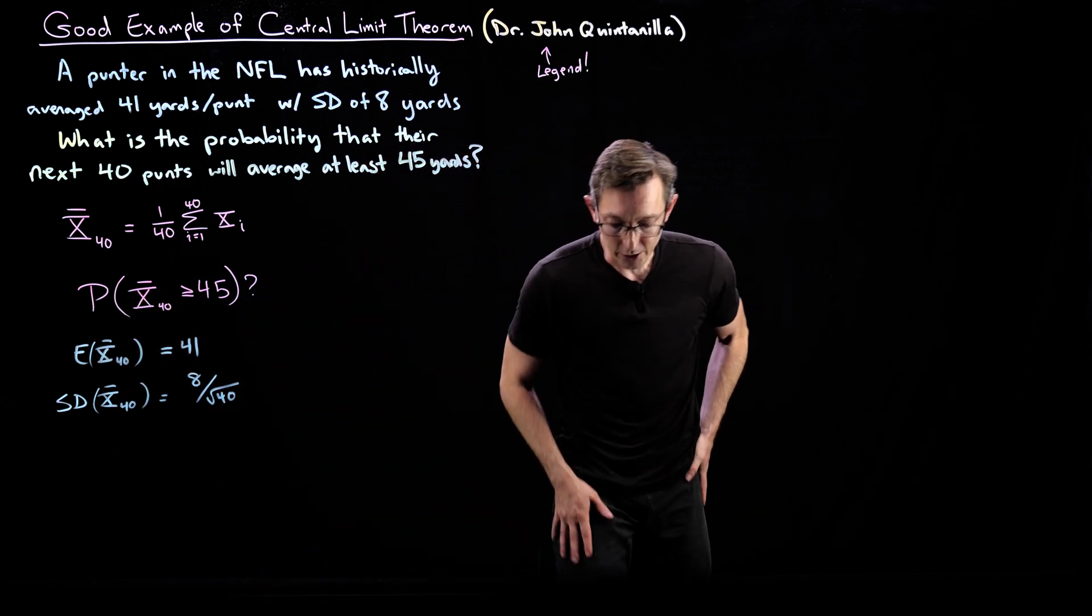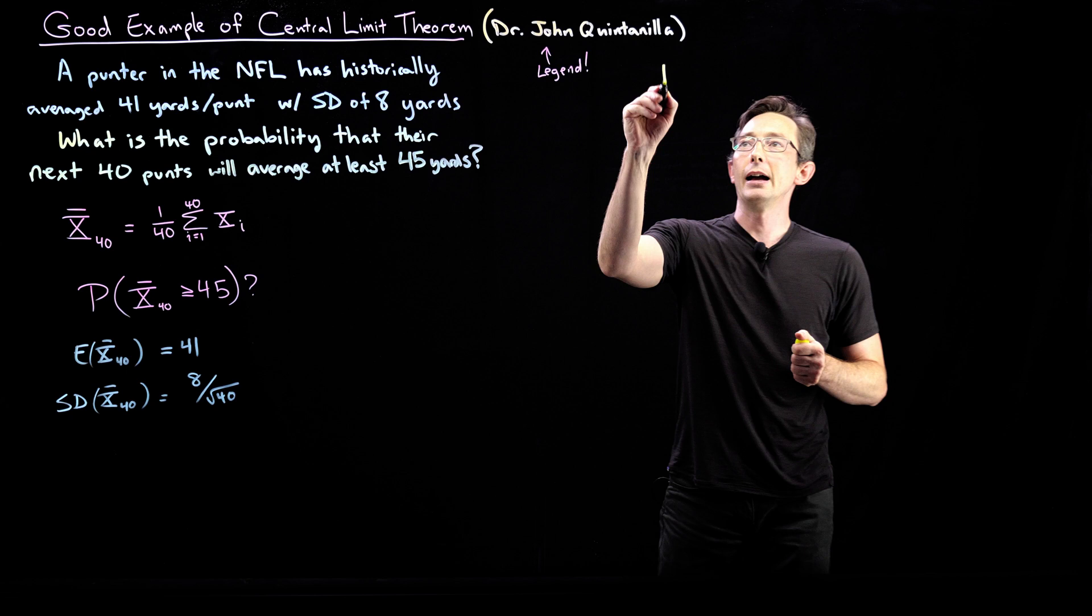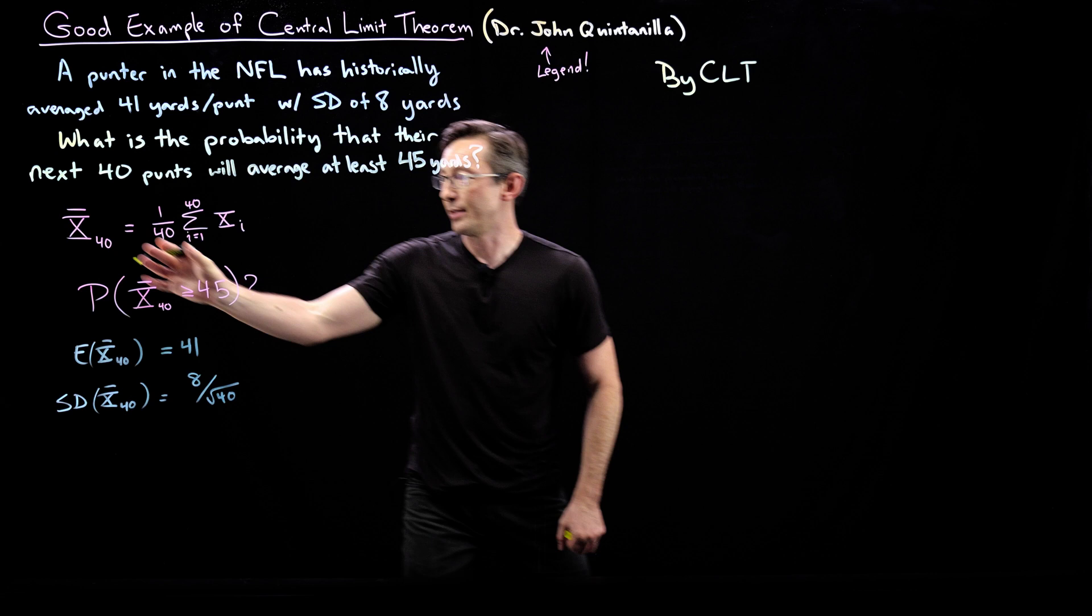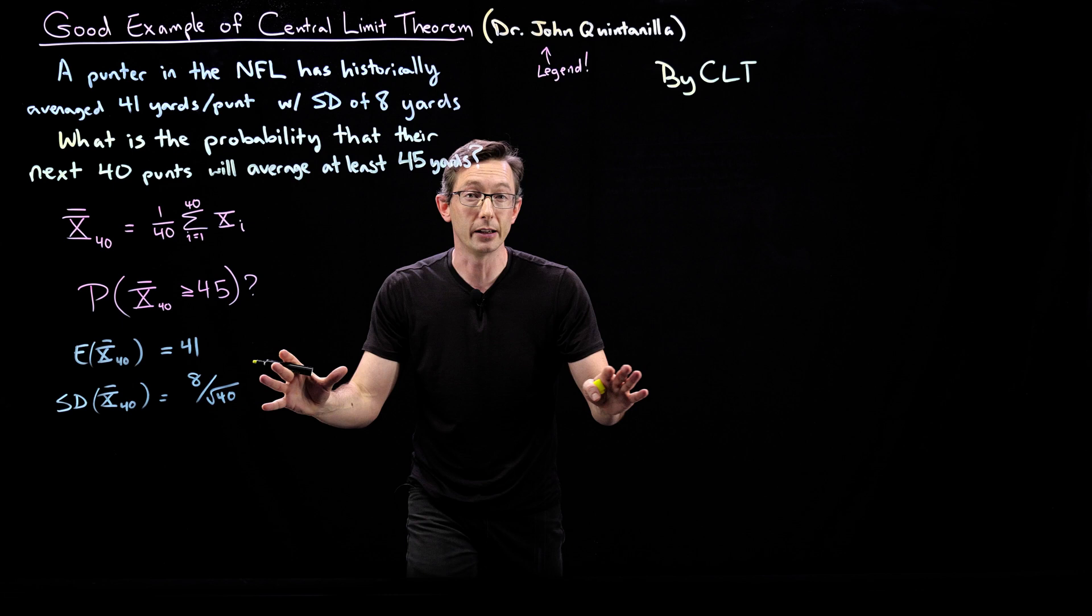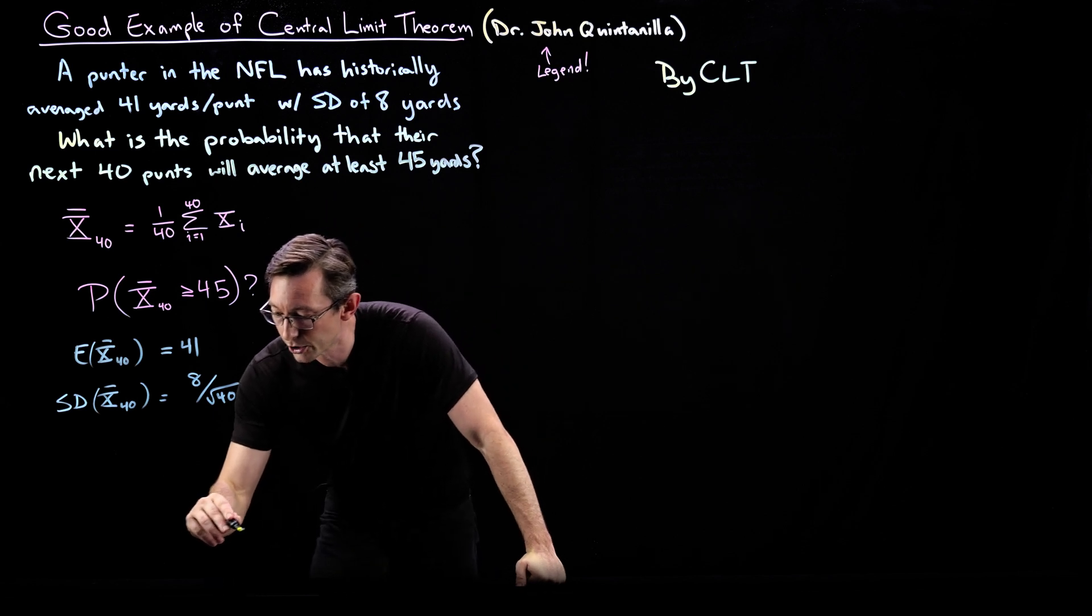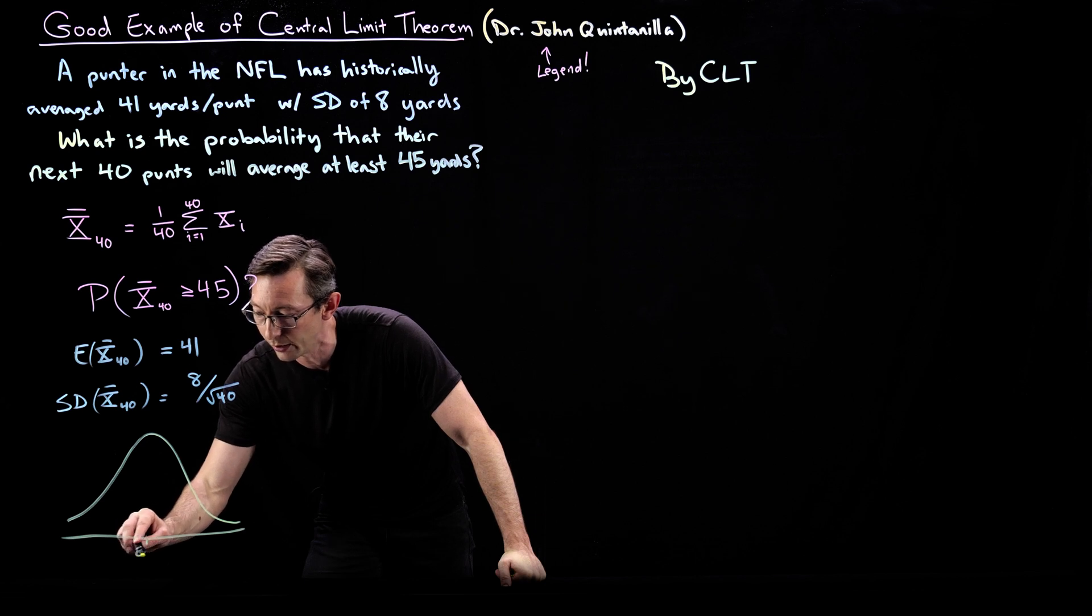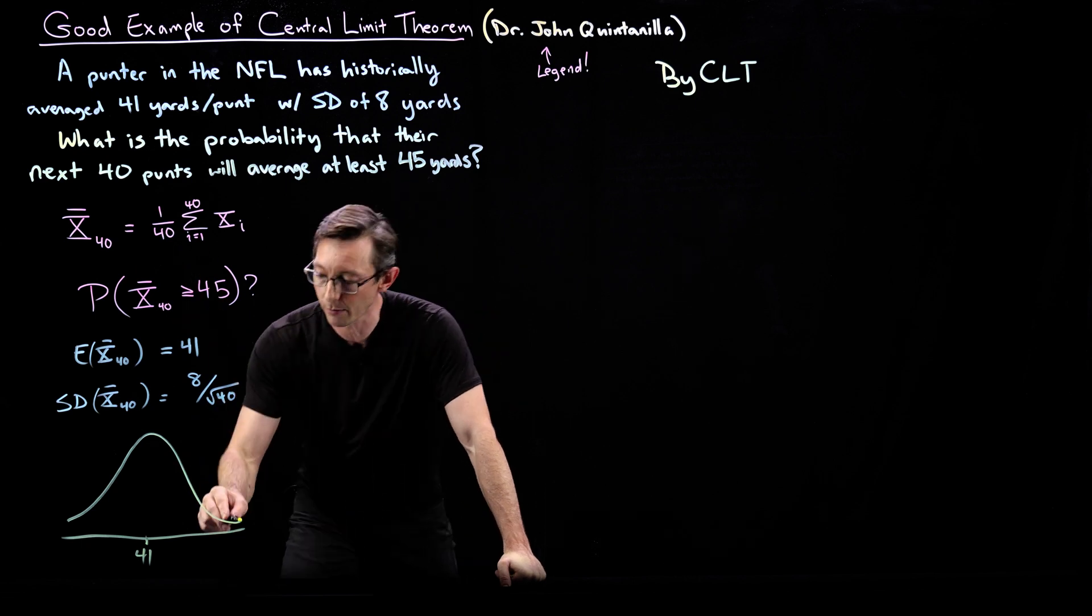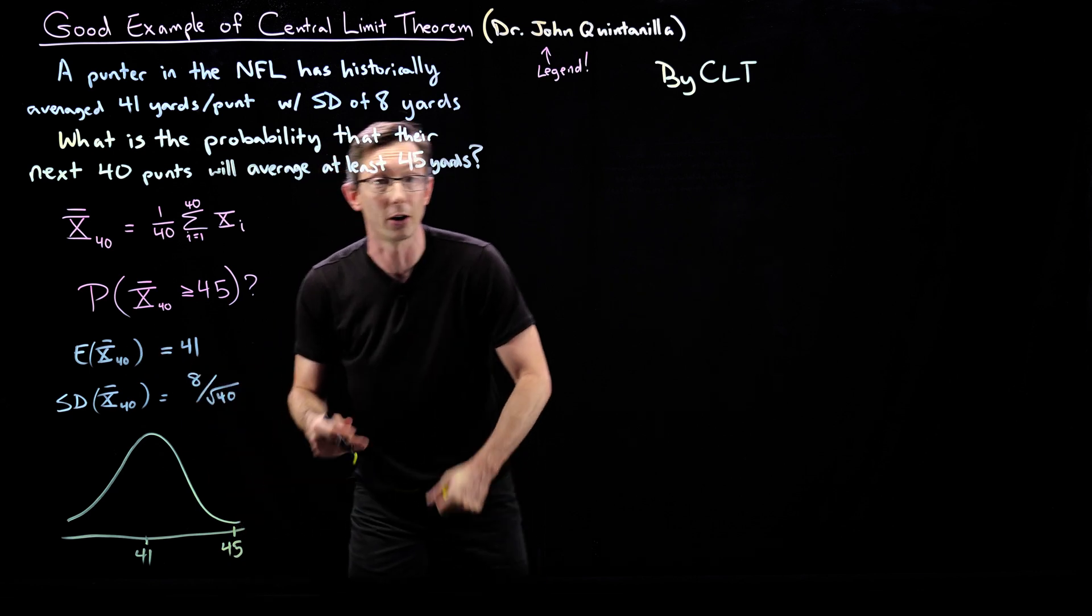And so essentially what we're going to do is we're going to write down by the central limit theorem, we're going to derive what this probability has to equal. So by the central limit theorem, essentially this random variable, because 40 is a large enough sample size, this should be approximately normally distributed with this mean and this standard deviation. So essentially we should have x 40. It should have a distribution around the mean of 41 with some standard deviation, some plus or minus sigma. And we're trying to figure out what's the probability that we're all the way out here at an average of 45 kicks, 45 yards per kick.